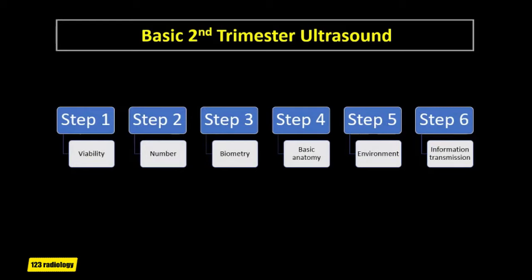How do we do that? There are six steps. First, verify the viability of the fetus. Second, identify the fetal number. Then do fetal biometry. Then do a basic anatomy survey. Then look at the fetal environment. And finally, don't forget to transmit information.